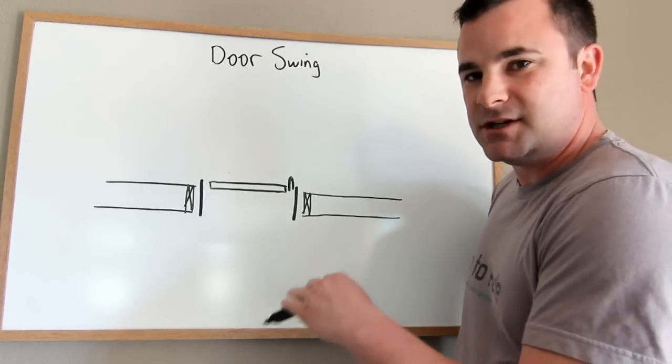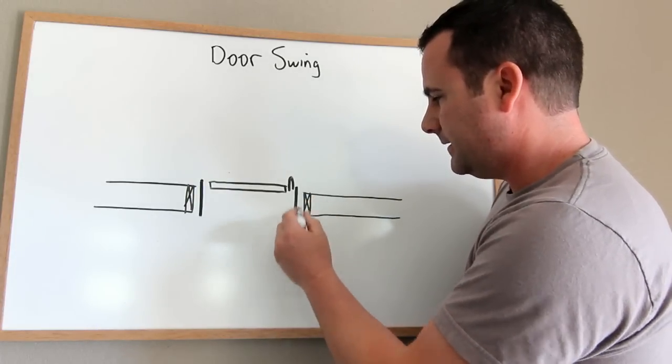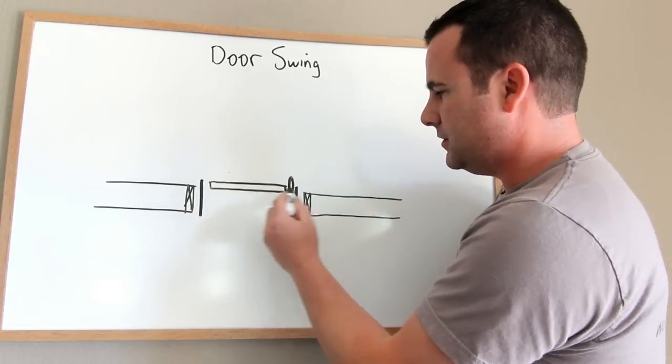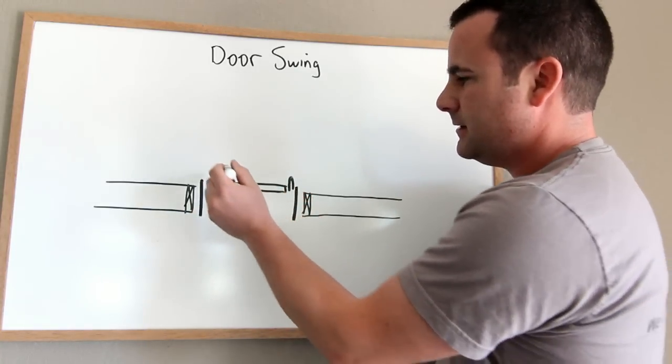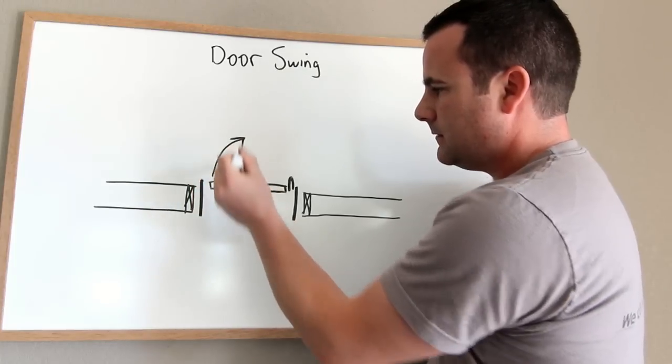So this is just looking downward on like a top view. So this is your framed opening. This is your jam and your door. And so this is the hinge right here. So this door would swing like this.